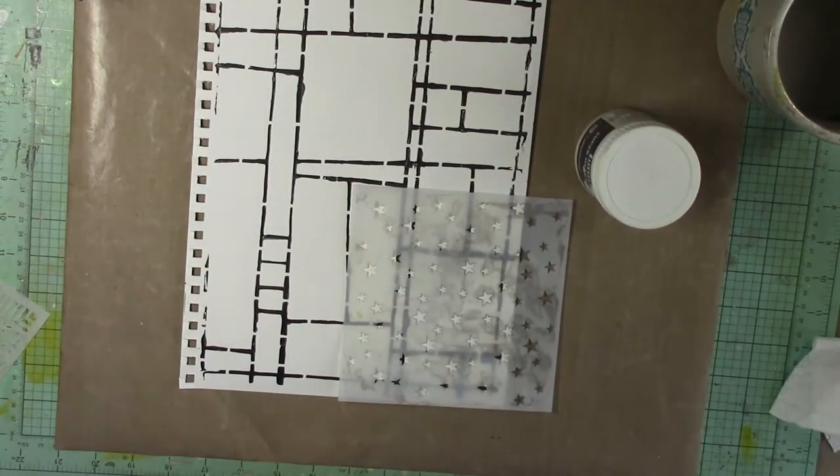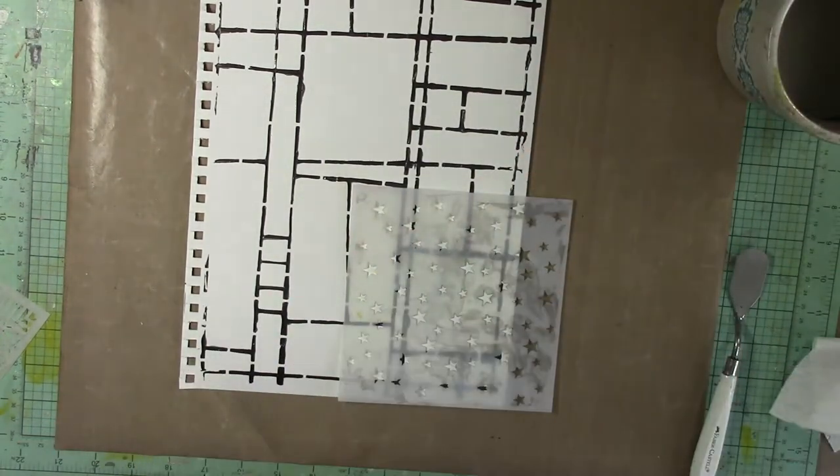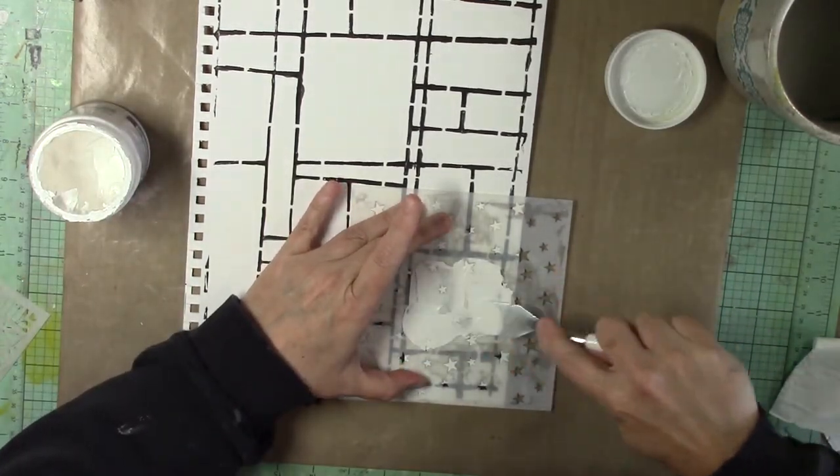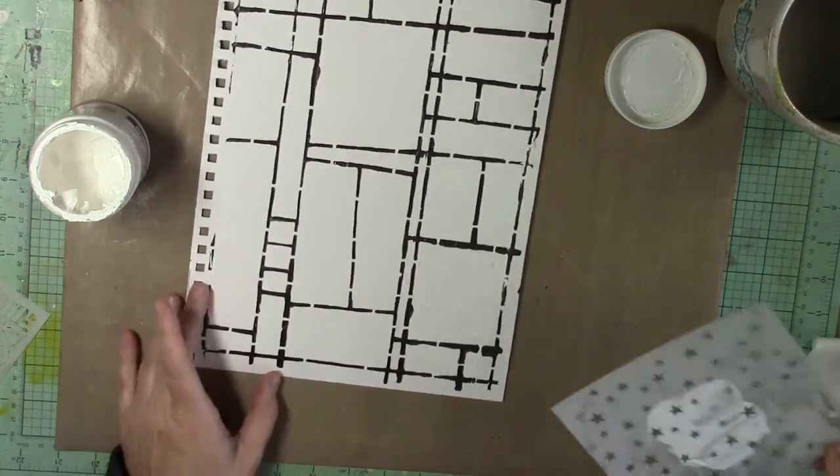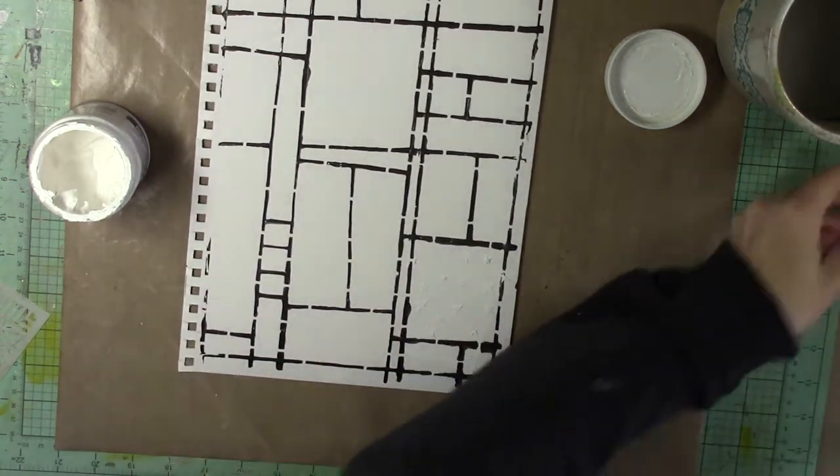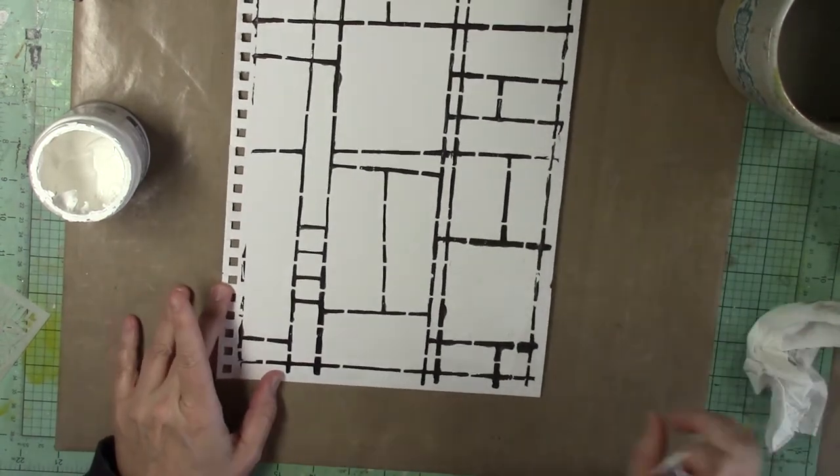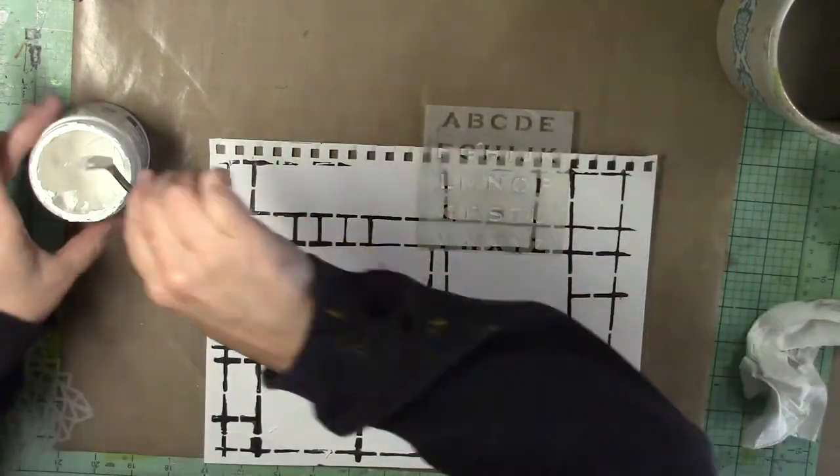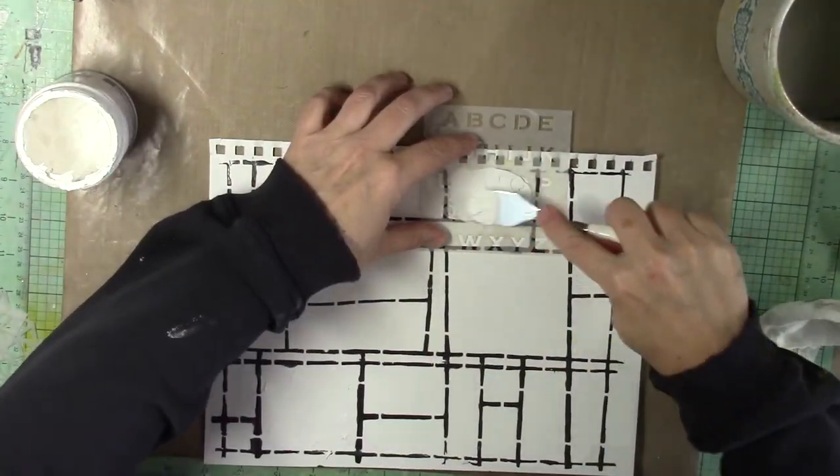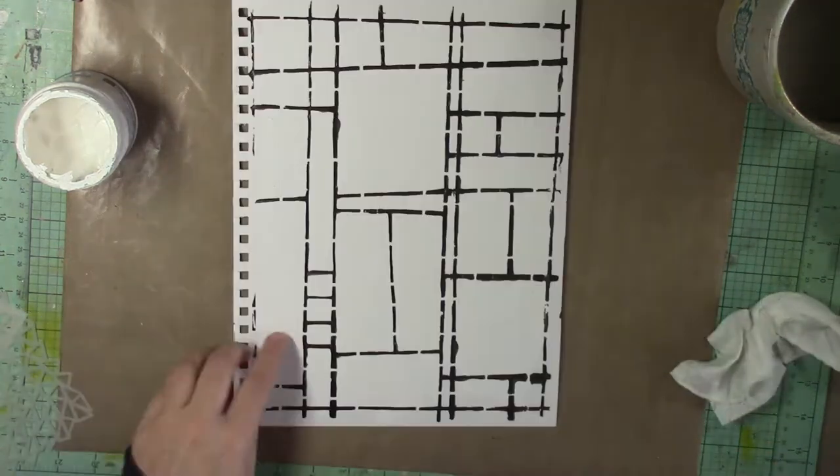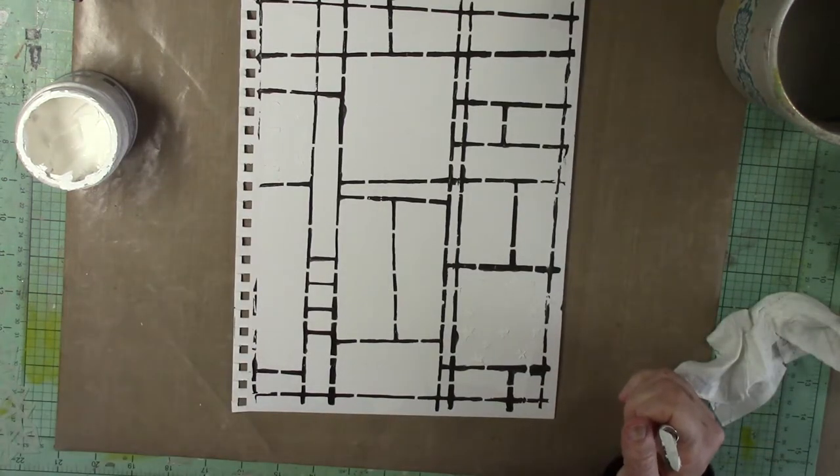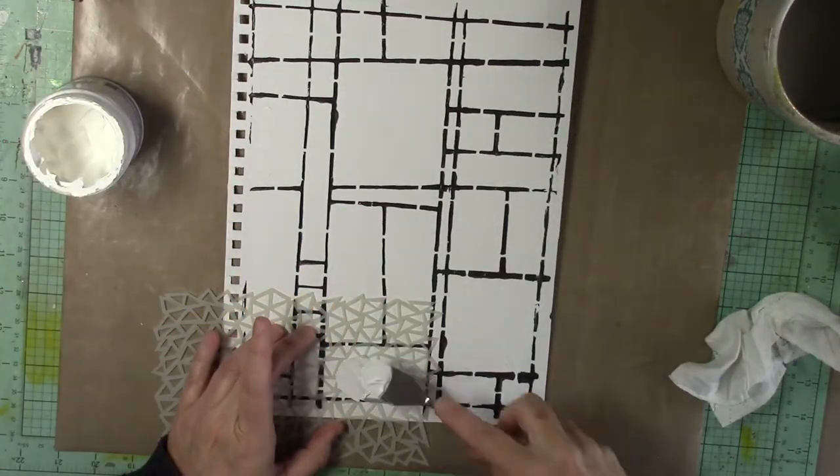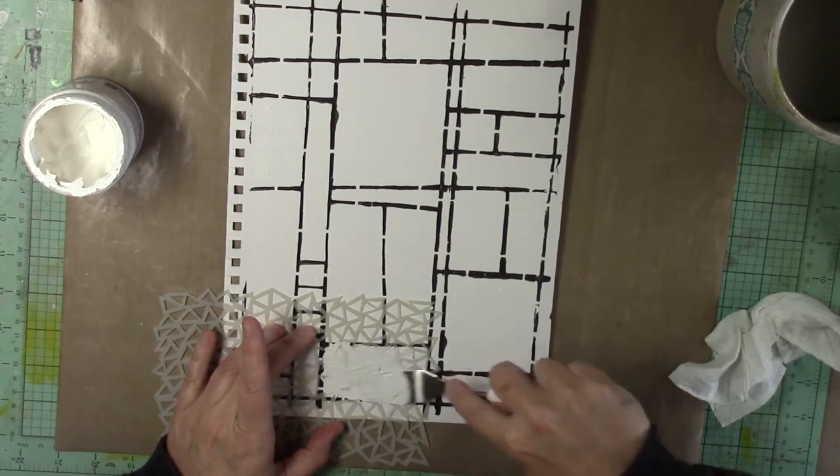Instead of just painting each square, I'm going to add some more texture to the background. I'm using super heavy gesso and some other stencils that I have just to create more interest and texture on my background. The super heavy gesso works really well for that—it creates a nice effect. You can see me just applying it to different varying squares on my art journal page with various stencils that I have from my stash. I'm alternating them here and there just to create more interest and flow to my art journal page.